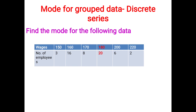Let's see an example for mode in discrete series. Find the mode for the following data: wages and number of employees. 150 — 3 employees; 160 — 16 employees; 170 — 8 employees; 180 — 20 employees; 200 — 6 employees; 220 — 2 employees.